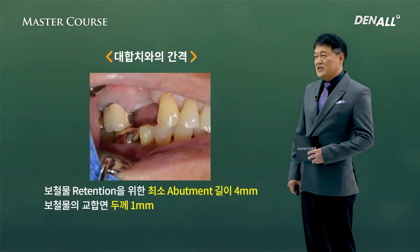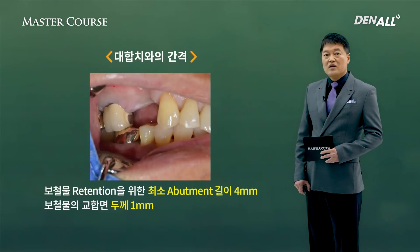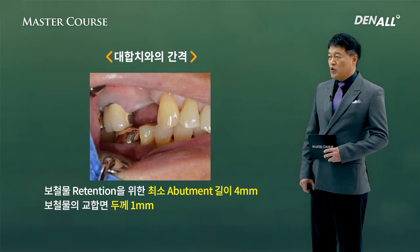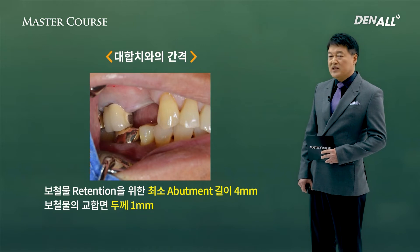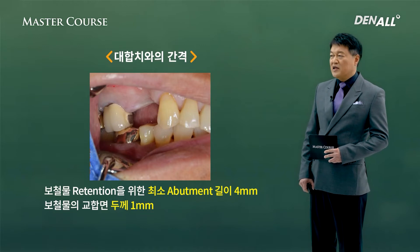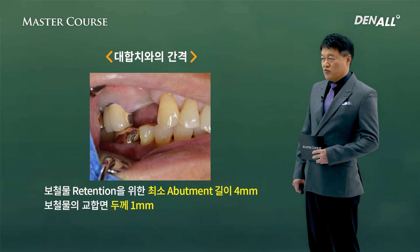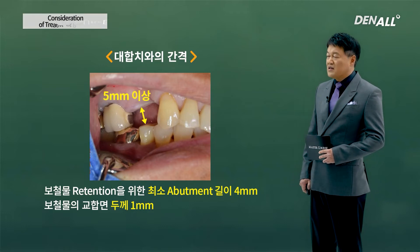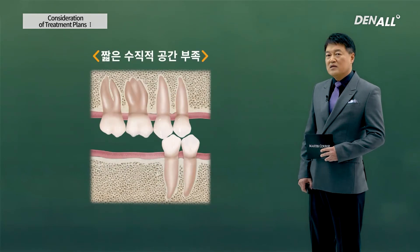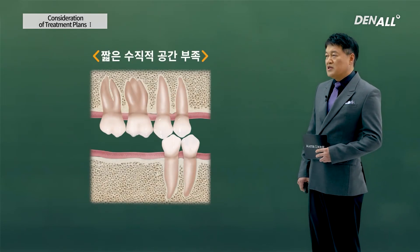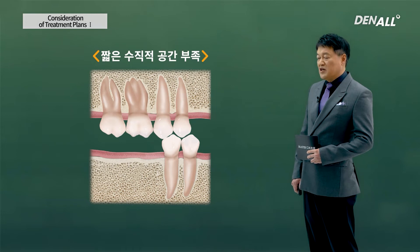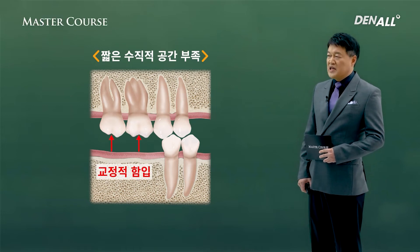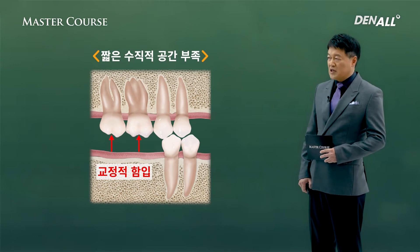Next to consider is the distance with opposing teeth. For prosthetic retention, minimum abutment length is 4 mm, and the occlusal surface of the prosthesis needs to be at least 1 mm. The distance from the alveolar crest to opposing teeth needs to be more than 5 mm. However, due to extrusion of opposing teeth, if there is short vertical space, you can do orthodontic intrusion first and then proceed with implant surgery.